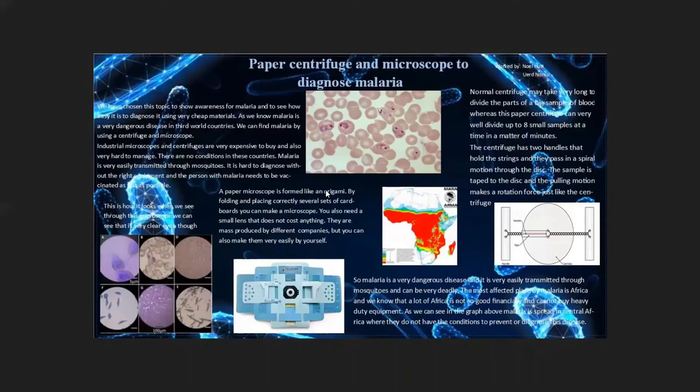The paper microscope is formed like an origami. There are several sets of cardboards and by folding and placing you can easily make the microscope. You just need a small light and a lens that does not cost anything. You can see in the figure how it looks.